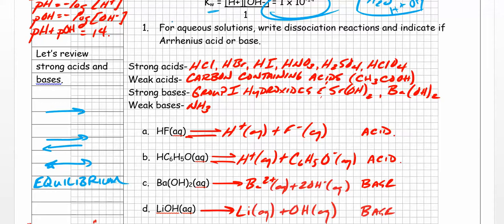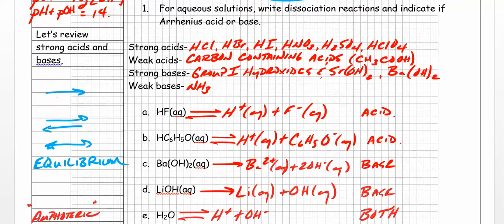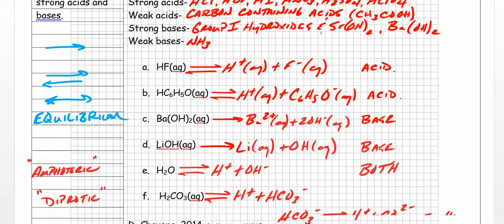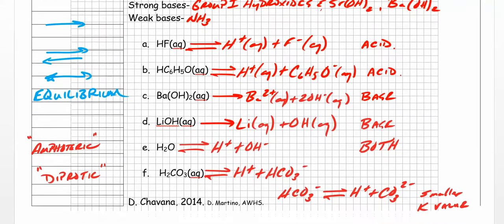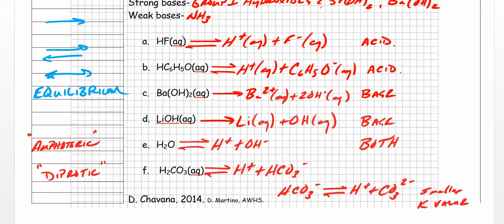Let's take a look at what the instructions say: for aqueous solutions, write dissociation reactions and indicate if it's an Arrhenius acid or base. Hydrofluoric acid - is it weak or strong? It's weak, so we put a double arrow. It dissociates into H+(aq) and F-(aq). It's an acid. There's only one hydrogen that's going to come off.